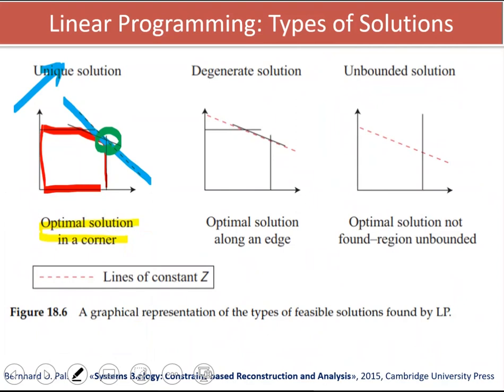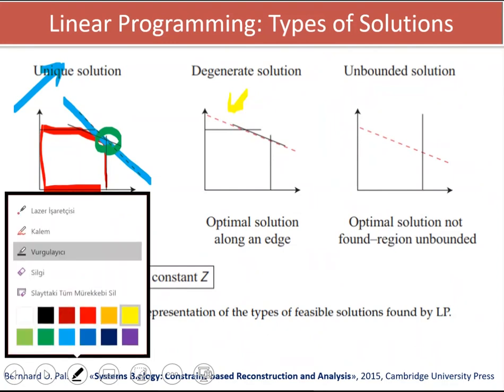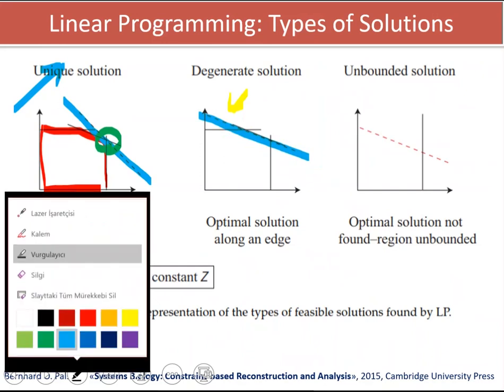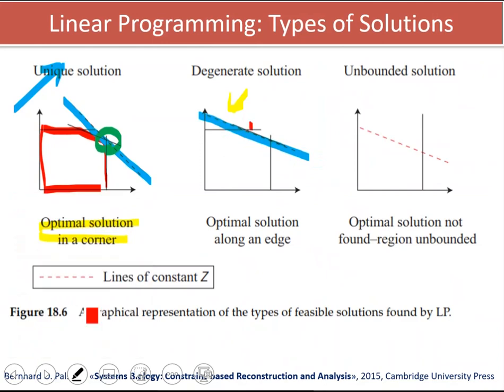What if, as in this case, the objective function is parallel to one of the edges in the solution space? So in this case, if you try to take the maximum value of the objective function, the intersection is not a point, but it is a set of points.